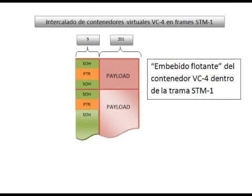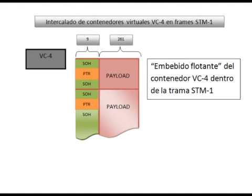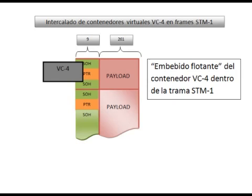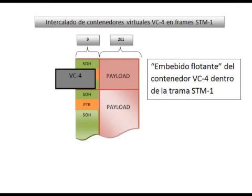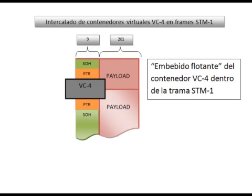Hay un embebido flotante del contenedor virtual de orden 4 dentro de la trama STM1 en la sección del payload. En la figura se muestra como parte del contenedor virtual de orden 4 es transmitido en una trama STM1 y la otra parte dentro de la trama siguiente. En este caso, el puntero PTR indica el inicio del contenedor virtual de orden 4 dentro de la sección de la carga tributaria.